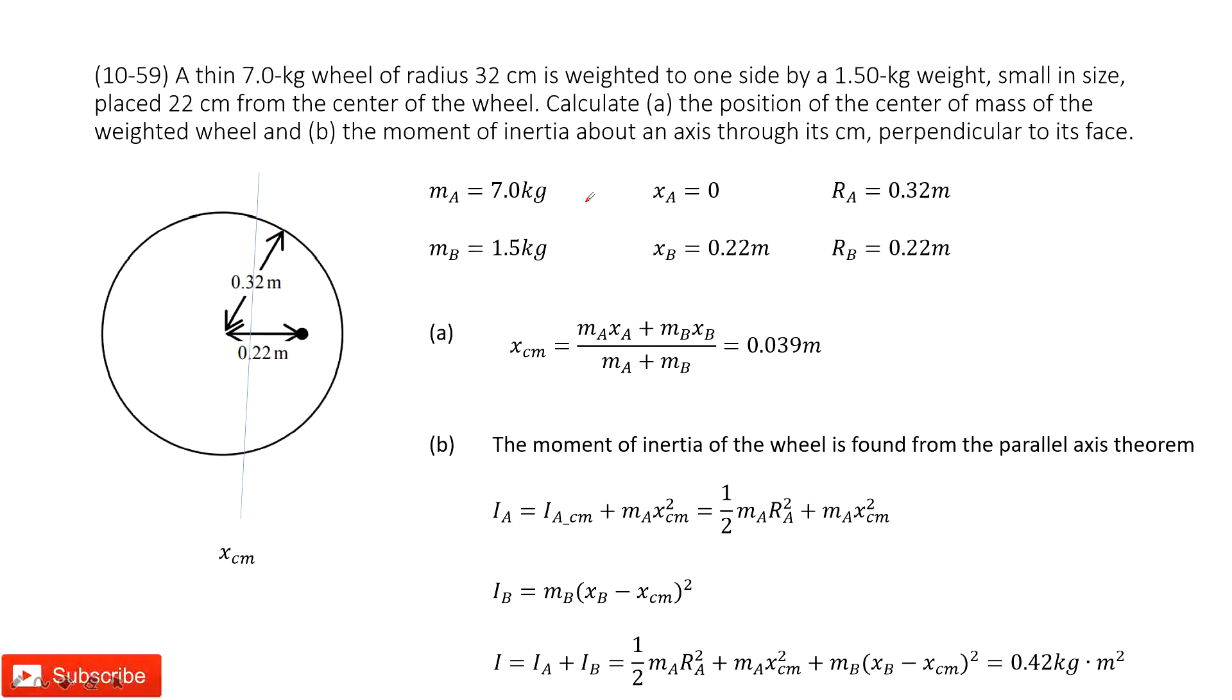In this chapter, we talk about rotational motion. You can see we have this system. We have a wheel, and the mass is given.